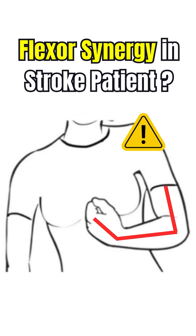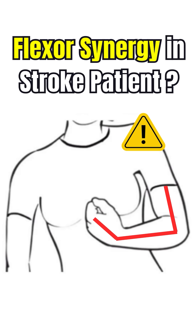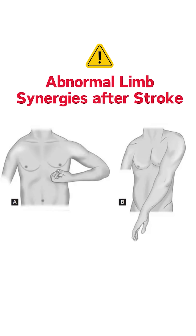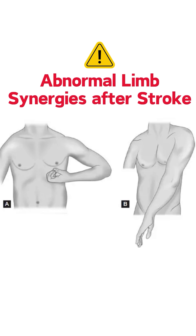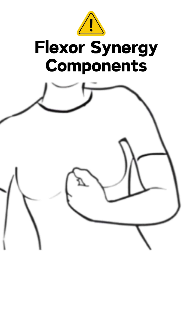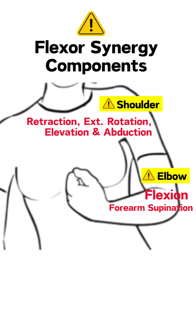As soon as flaccidity starts getting replaced by the onset of spasticity, one can expect to see basic limb synergies appear in stroke patients. The important components of the upper limb flexor synergy in hemiplegic patients are shoulder retraction and elevation, along with shoulder external rotation and abduction, elbow flexion and forearm supination, along with wrist and finger flexion.